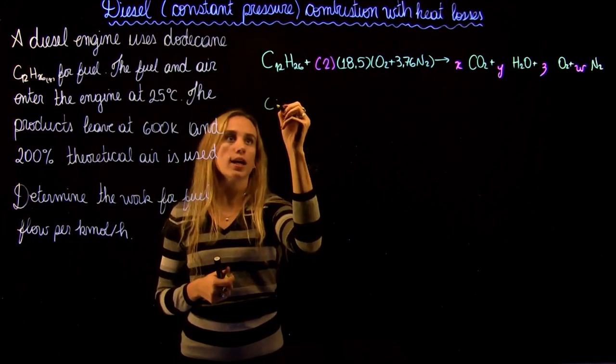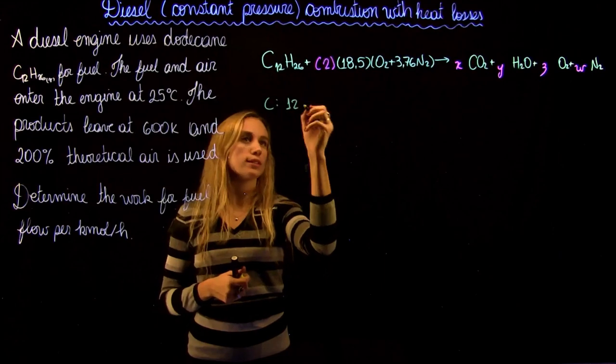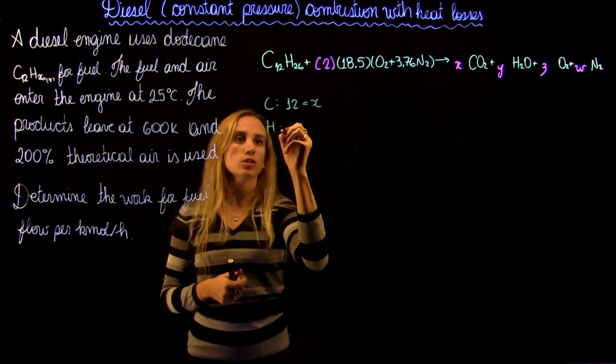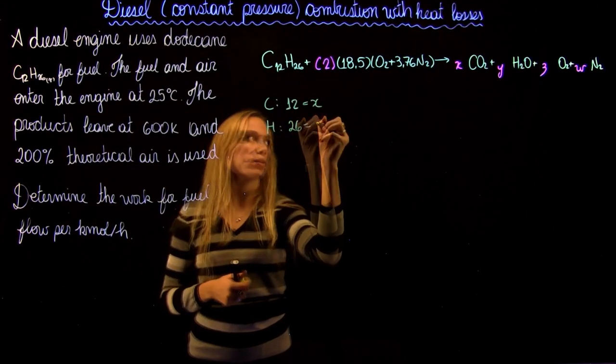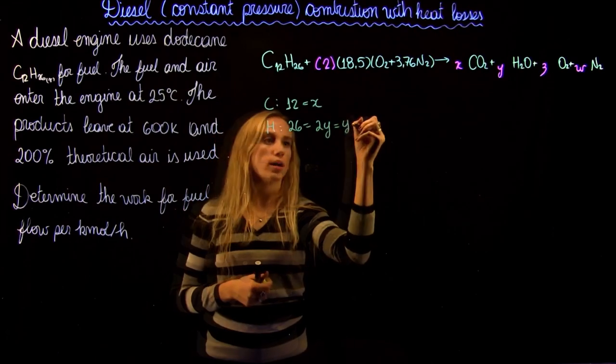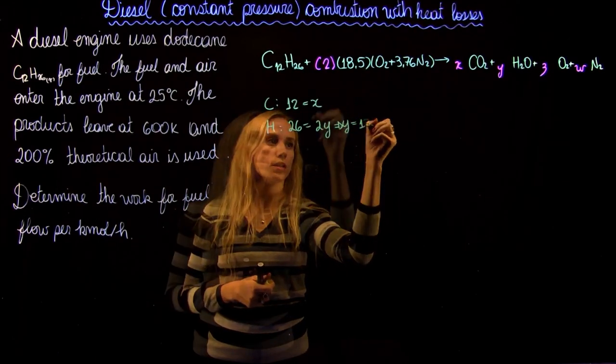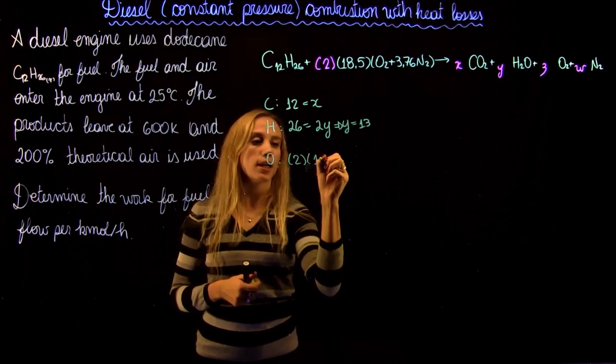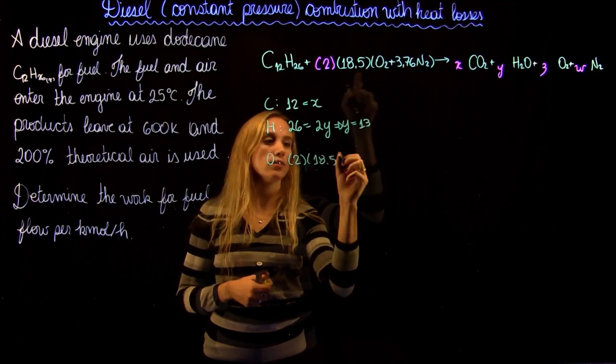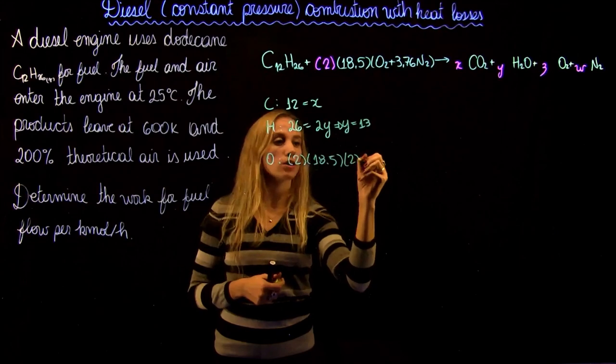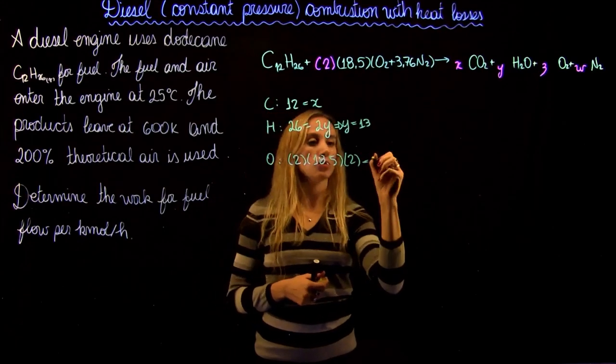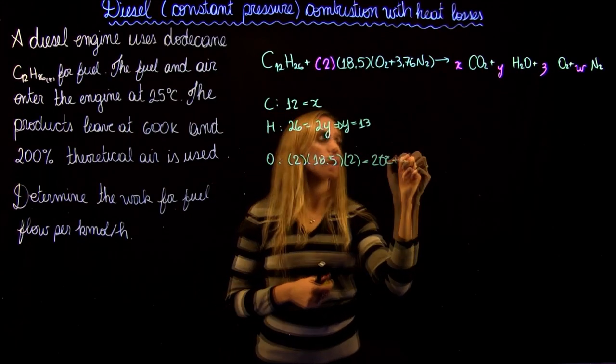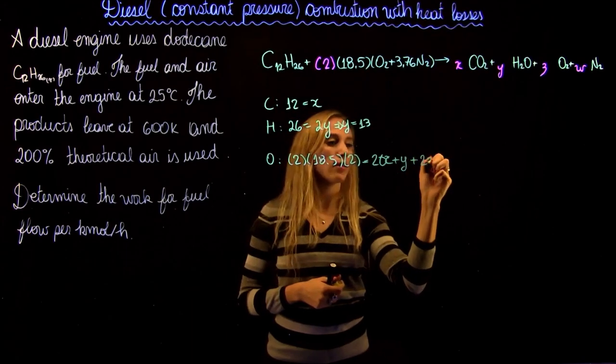So if we write for the carbon, we're going to have 12 equals x. For H, we're going to have 26 equals 2y, so y is going to be 13. And then for O, we're going to have 2 times 18.5 times 2 from the oxygen equals 2x plus y plus 2z.